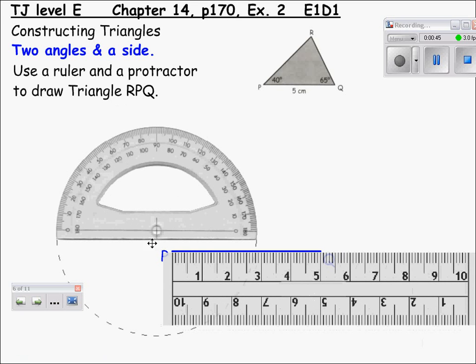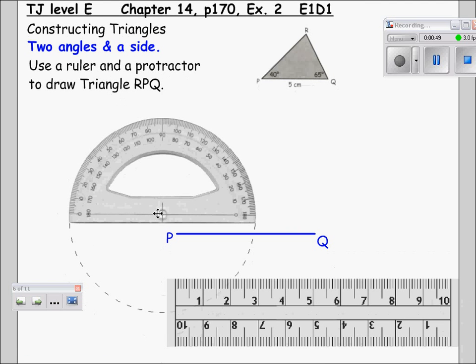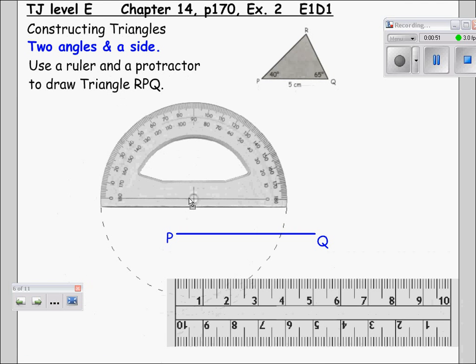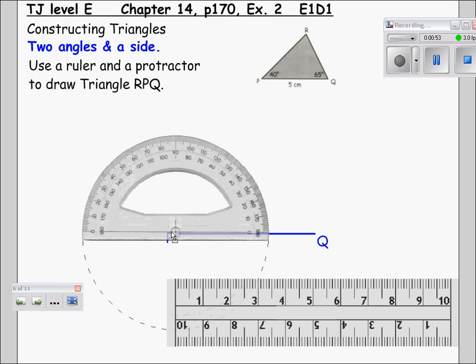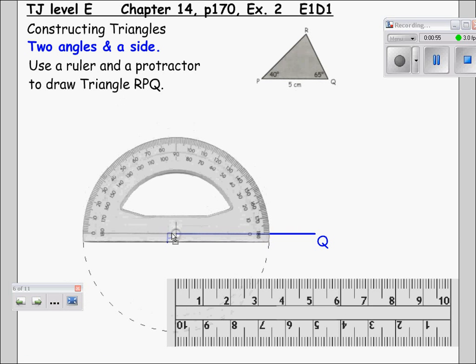Once you have drawn and labeled your line PQ it will be necessary to measure the two angles that we need. We will start by placing our protractor at point P on the line.